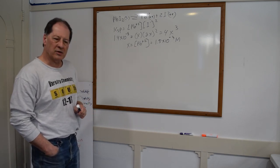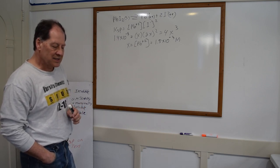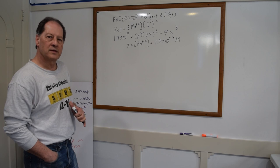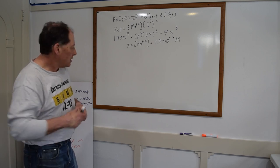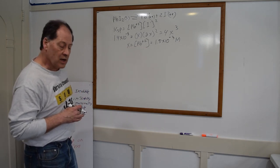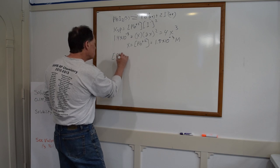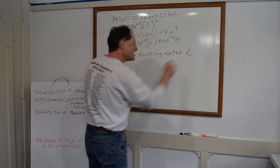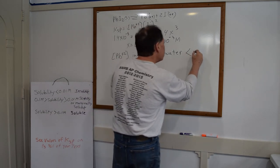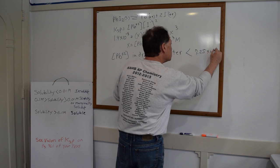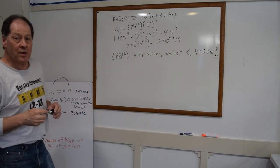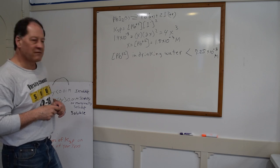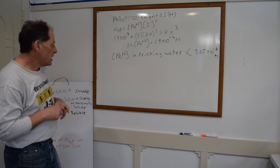So why do we worry about concentrations that are so small? The concentration of lead ions in drinking water must be less than 7.25×10⁻⁸ molar — that's what drinking water standards require. So we've got to worry about such tiny concentrations. This seems like something you could ignore, but when you're talking about food-grade things and drinking water, concentrations of ions that are super tiny are very important.